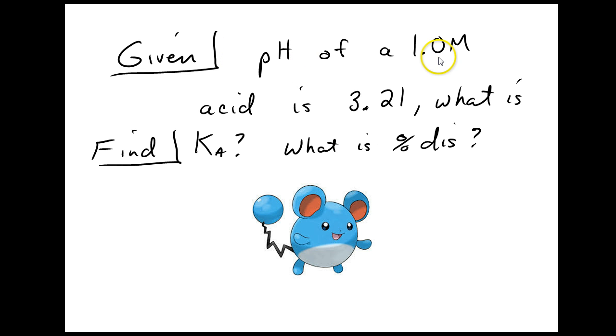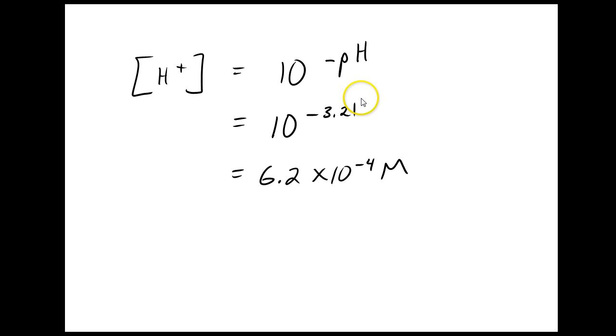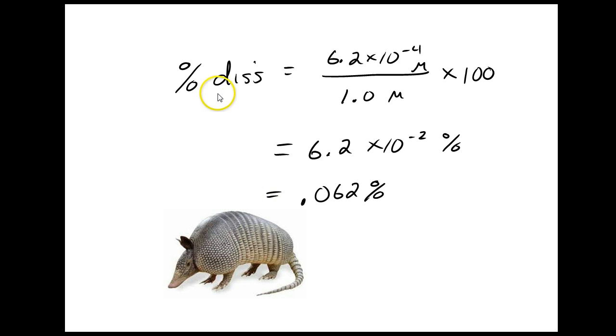Sometimes they give you the pH, and then they want you to find the Ka, so it's like you're doing the whole thing only in reverse. So for this problem, they've given us a pH of 3.21 for a one molar solution, and they want us to find Ka and the percent dissociation. I'm going to start off by trying to find my H+ concentration at equilibrium. I just used the pH to figure that out. My pH had two decimal places, so I have two sig figs here. Right away, I can write my percent dissociation. This is the amount of H+ I had at the end. Here's the amount of acid I had at the beginning. Then multiply by 100, and here's my answer.